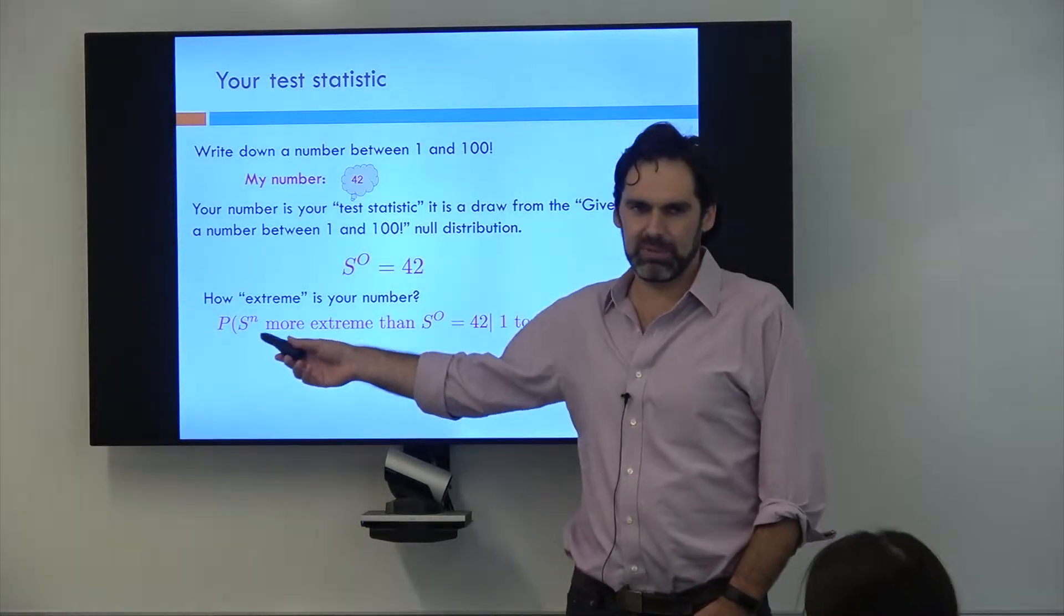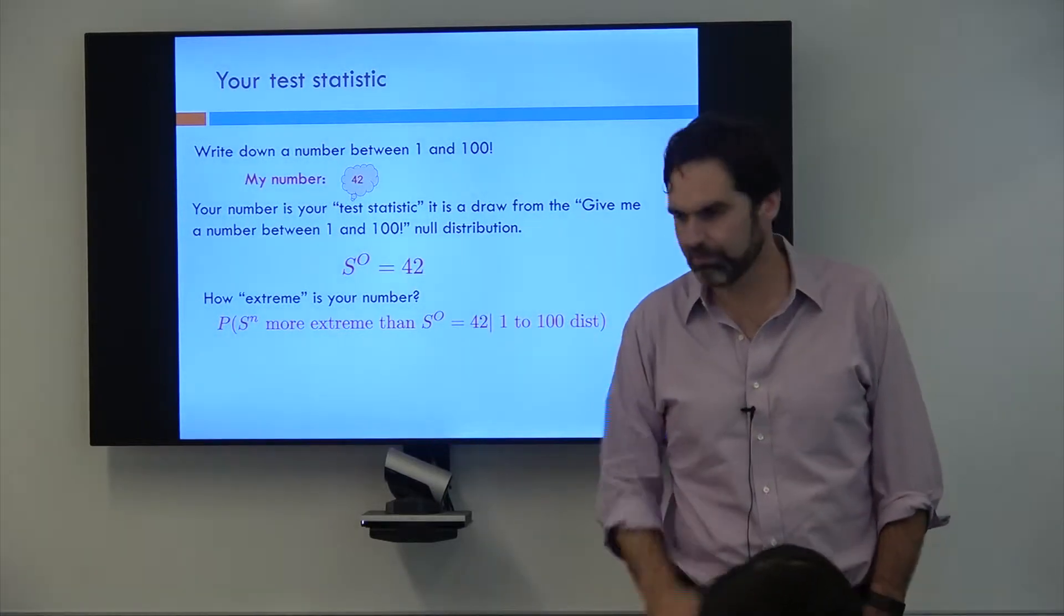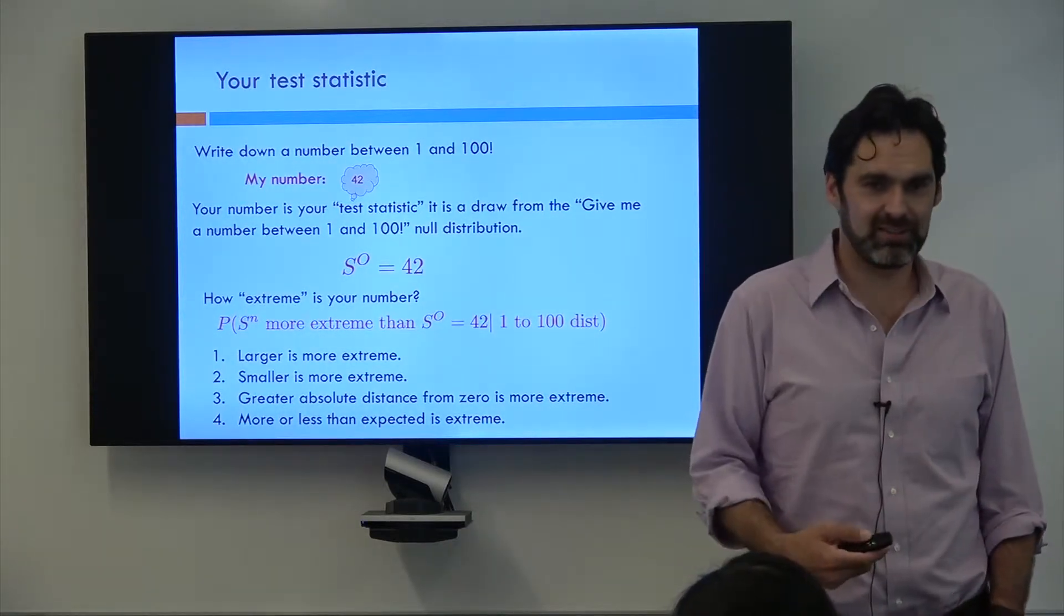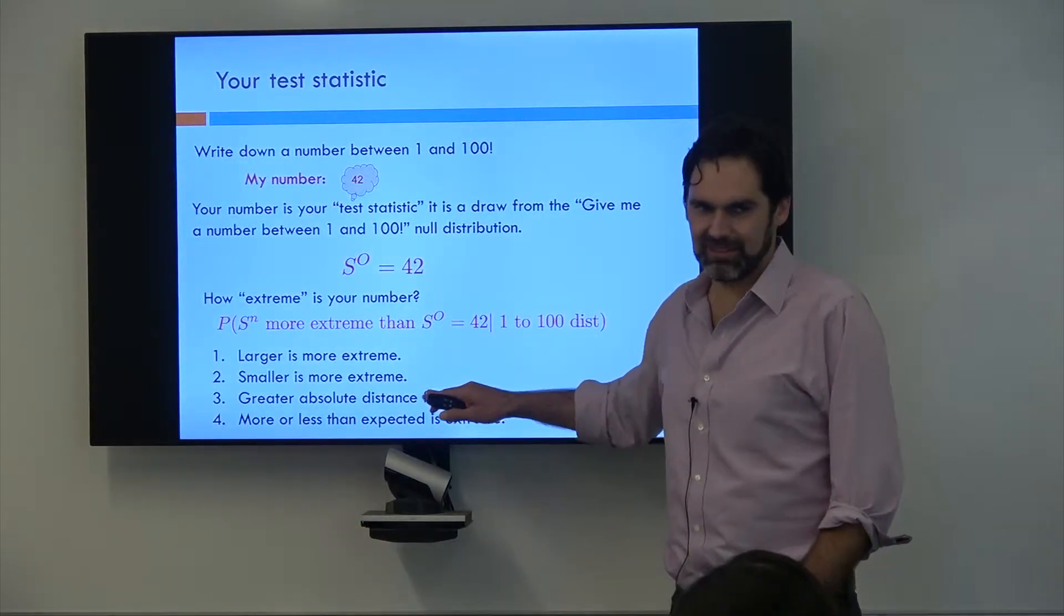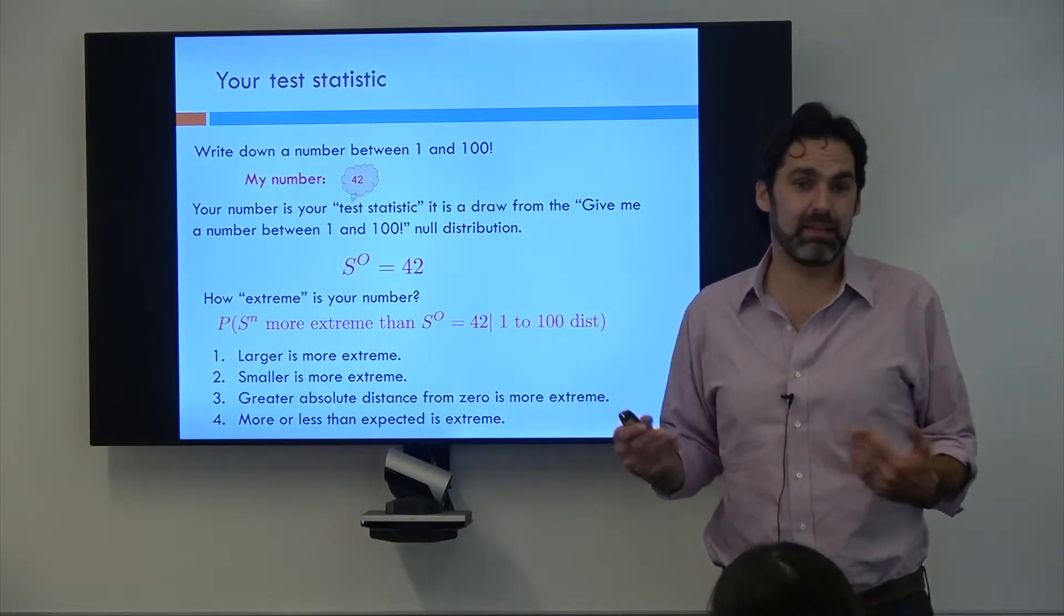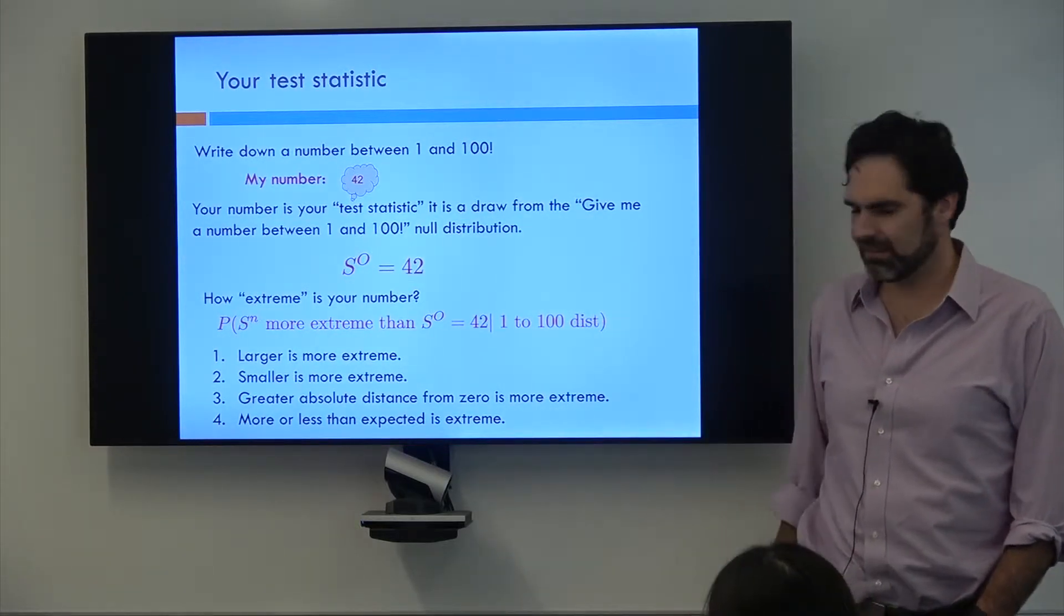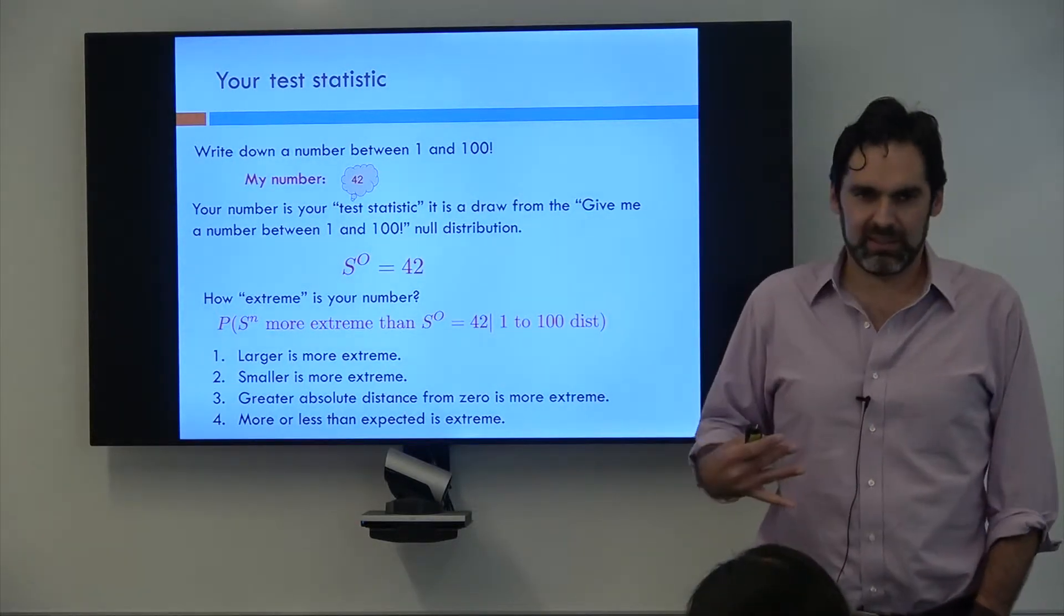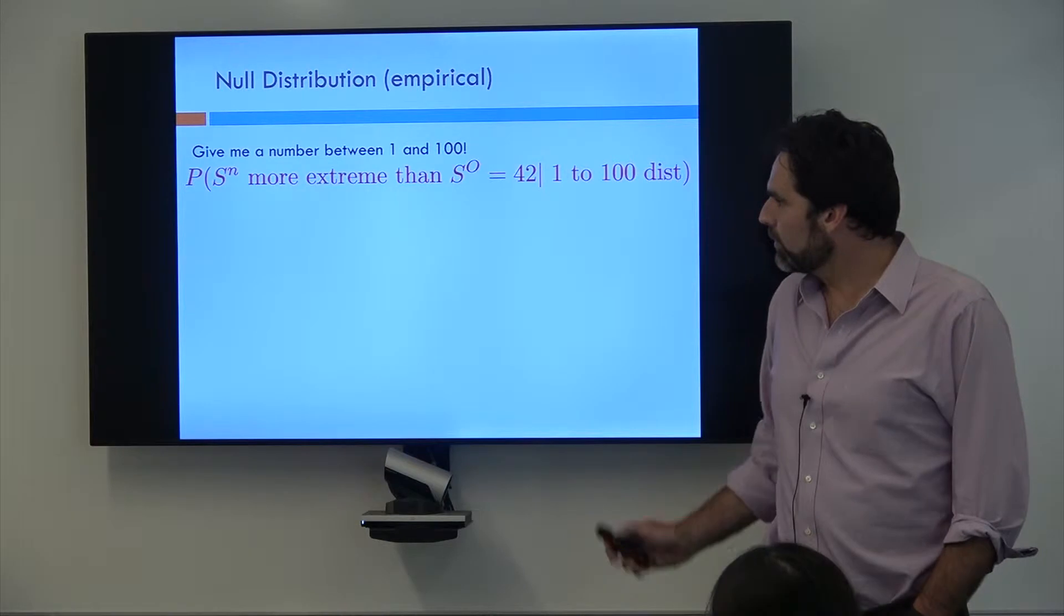And one question we can ask is, is the number you wrote down more extreme than what you'd expect by chance? Or we can really want to quantify this as like how extreme is your number? So the way we're going to write this probabilistically is we're going to say there's some number that could be drawn from this distribution of give me a number between 1 and 100. And then you have your number, mine was 42, and this is going to be your observed statistic. And you can ask, what's the probability that if we were going to draw one more number from here that it would be more extreme than what you wrote down? So we really have to define what is more extreme. And we can define it as it's a number larger than your number, it's a number smaller than your number, it's a greater absolute distance from 0 than your number. We could also maybe if we want to say it's a greater absolute distance from 73 than your number. We can come up with a lot of different distance metrics or you could say it's more or less than expected. So there's a lot of different ways we can say extreme, and we're going to try to define one of these here in a moment.